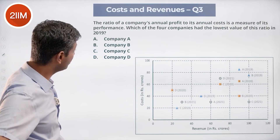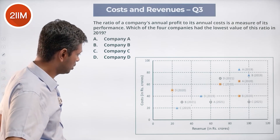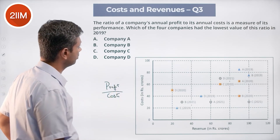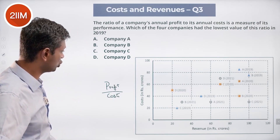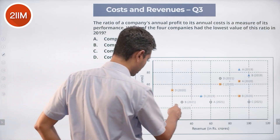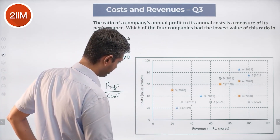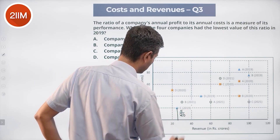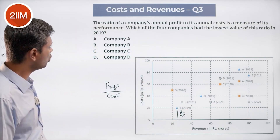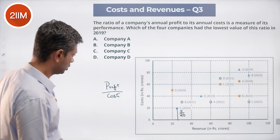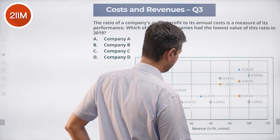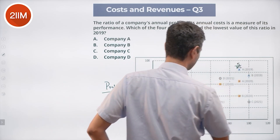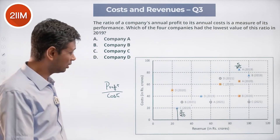The ratio of a company's annual profits to its annual cost is a measure of its performance. Which company had the lowest value of this ratio in 2019? Looking at C in 2019: profit is 90 minus 85 = 5, so the ratio is 5 by 85, which is very small. Let's compare with other companies.